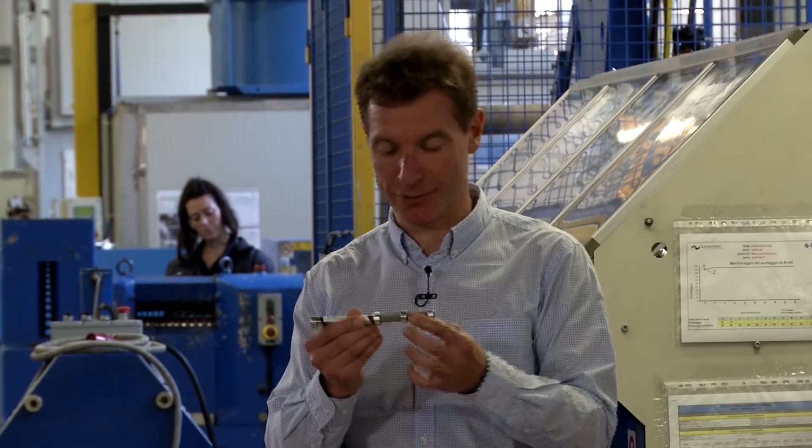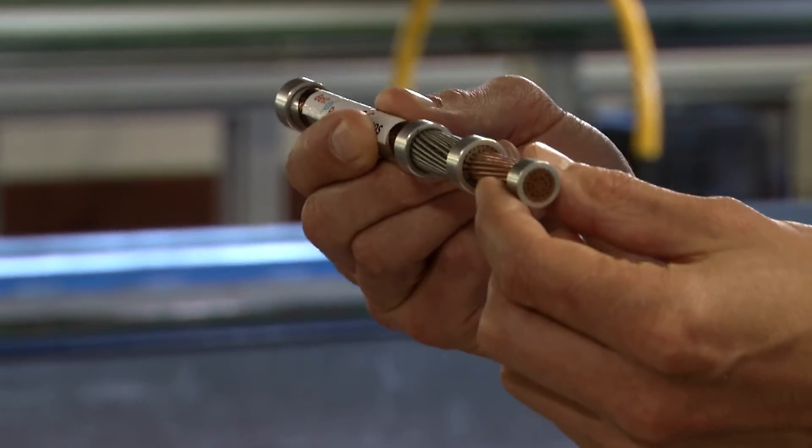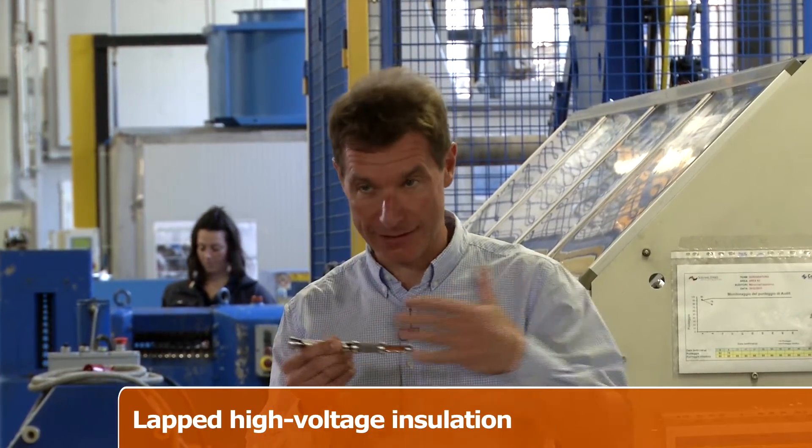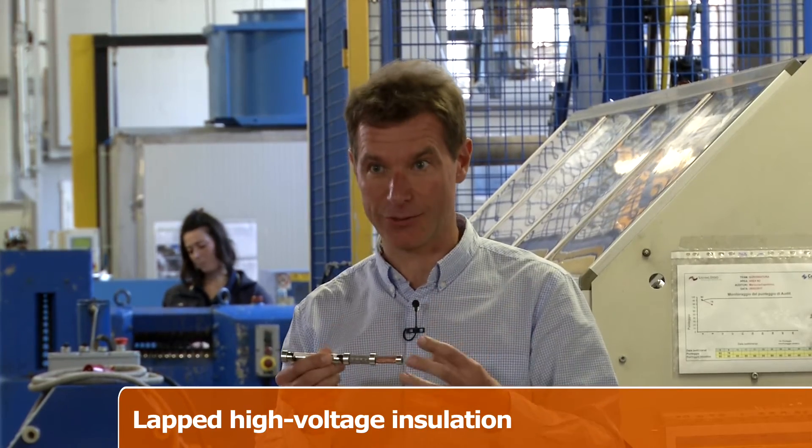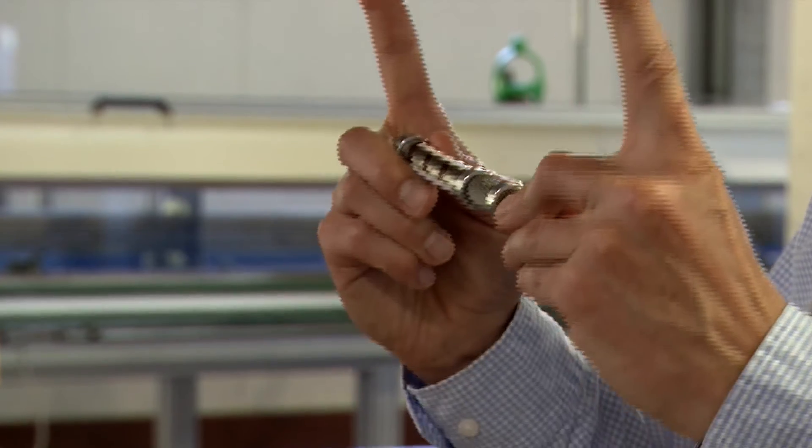The cable conductor discussed before is presented here as a short sample with its peripheral layer of superconducting wires. It must be now integrated with a lapped high-voltage insulation into a flexible cryostat for the cooling at the required low temperature. The cable will be ended by two terminations connected to the grid.